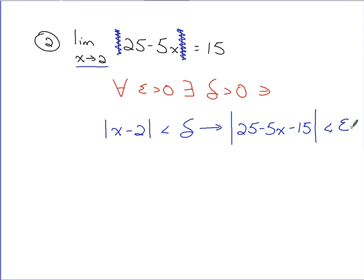So we know how the game is played now. We're taking what's inside the absolute value here. We're trying to turn it into an absolute value expression like we have over here. So as we clean this up, collecting like terms, we've got absolute value of 10 minus 5x.